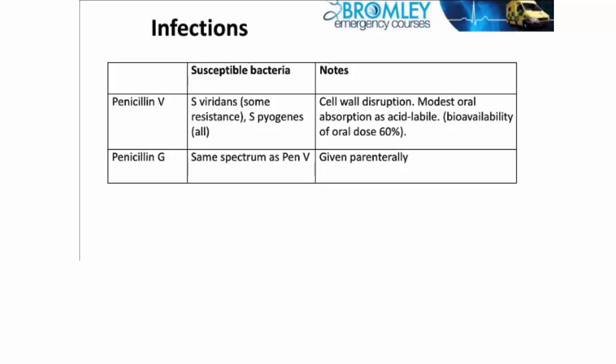Penicillin G has the same spectrum as penicillin V, but is given parenterally by injection, and much higher levels are achieved in the circulation, so it's more effective for the situations when we use it, which these days is largely for cellulitis.